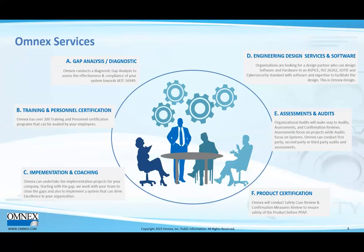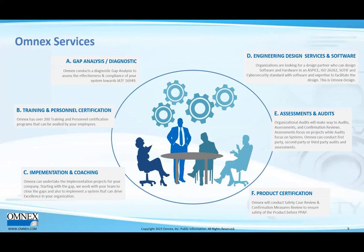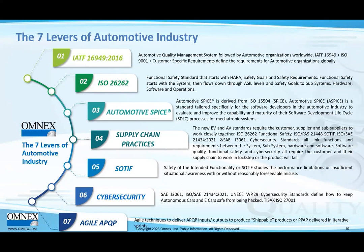Our services are not only software — that's probably our biggest advantage on the market. We integrate both our methodology experience with software. We do gap analysis and diagnostics, training and personnel certification, continuous improvement, implementation and coaching, engineering design services and software, assessments and audits, and product certification. The seven levers of the automotive industry include IATF 16949, ISO 26262, Automotive SPICE (ASPICE), supply chain practices, SOTIF, cybersecurity, and Agile APQP.